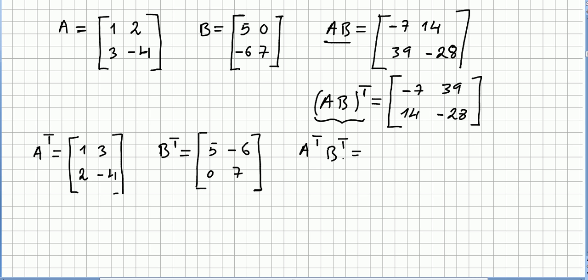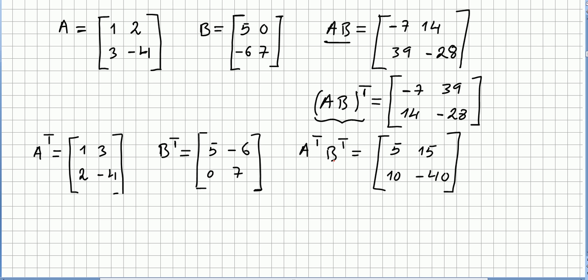So my question now is, what is the product of A transpose times B transpose? So the transpose of A, A transpose times B transpose. So the product of these two matrices will be 5, 15, 10, -40. So can you see that this matrix here is not the same as this one?